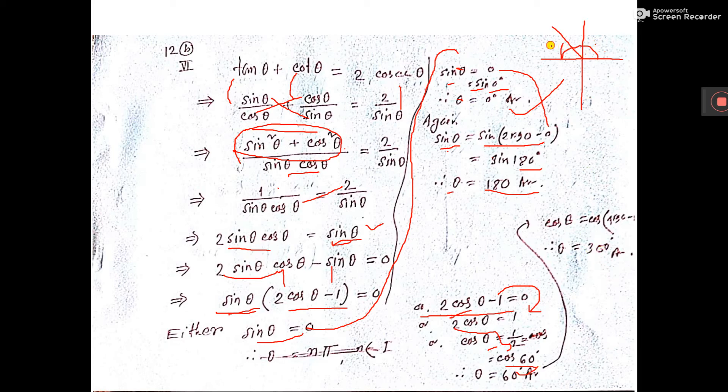Again, all sin, tan, cos, fourth quadrant also positive. So you can write 4 into 90 minus 60 degree. Here it is 60 degree. So 4 nines are 36, 360 minus 60 that is 300 degree. This is also one answer.